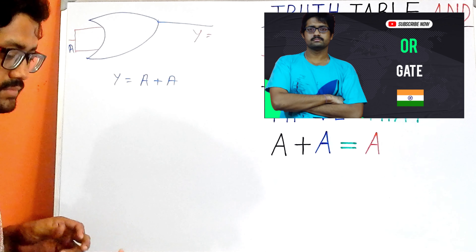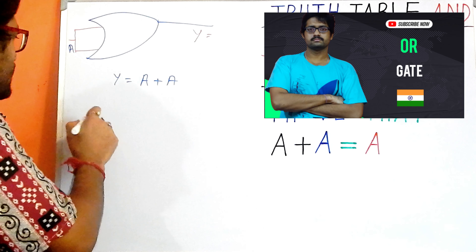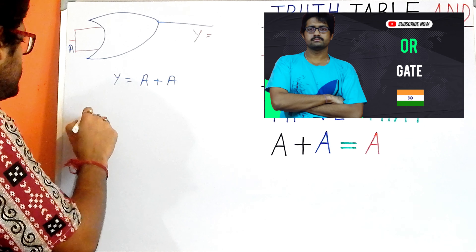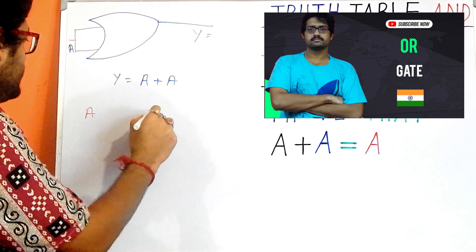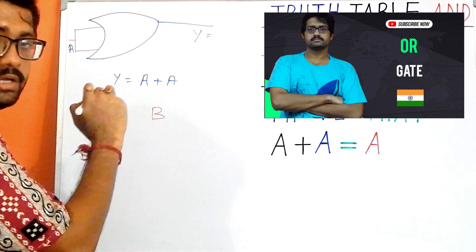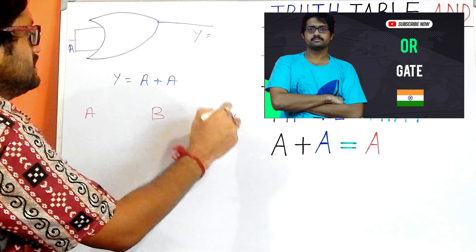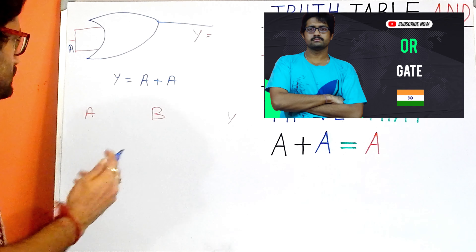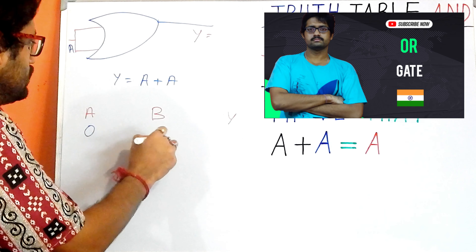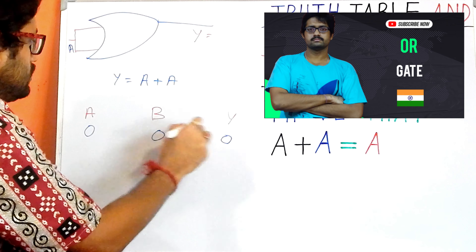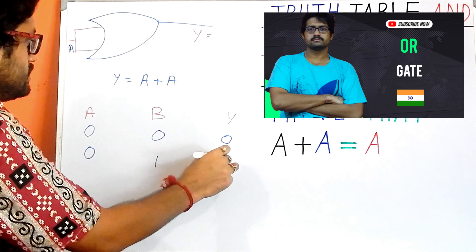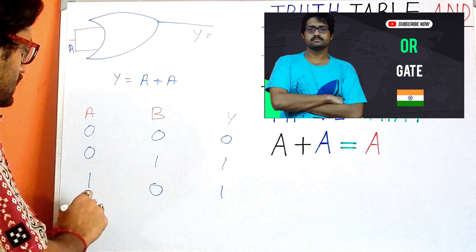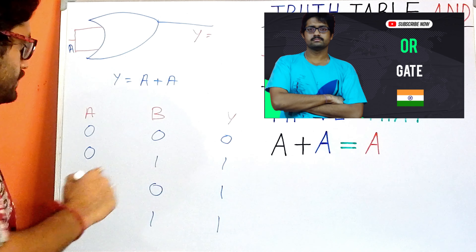So what is the truth table? I just need to write the truth table first. Taking A and B as inputs and the output: zero zero gives zero, zero one gives one, one zero gives one, and one one gives one.